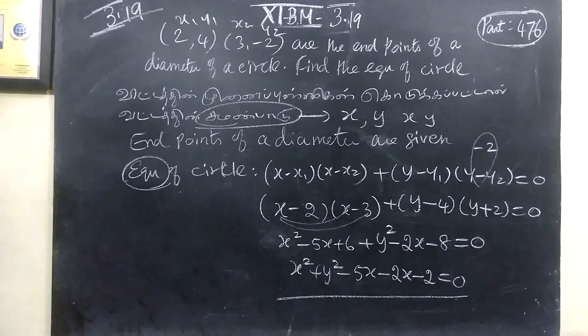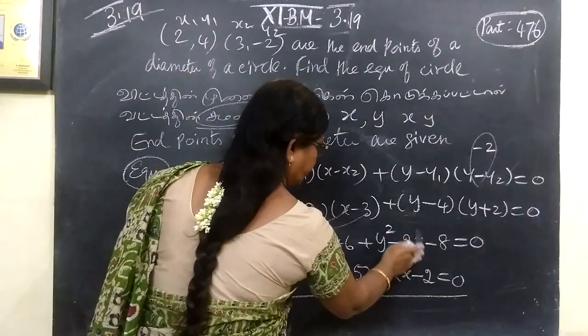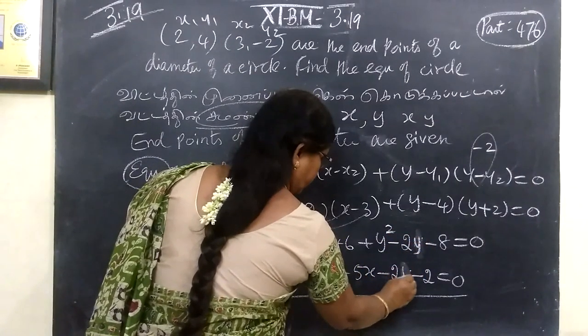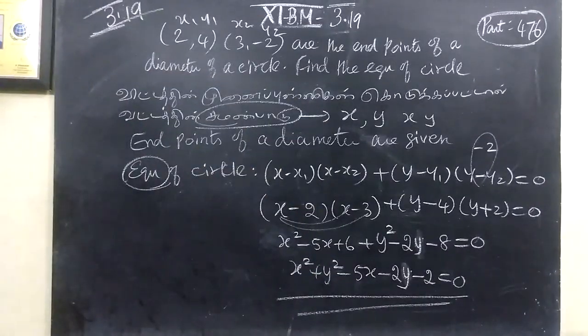Then y squared minus 2y minus 8 equal to 0. So x squared plus y squared minus 5x minus 2y minus 2 equal to 0 is the equation of circle.